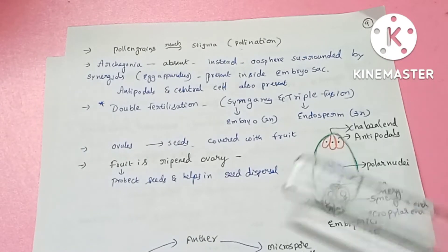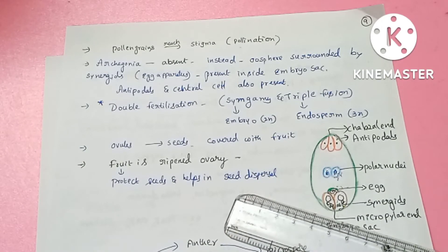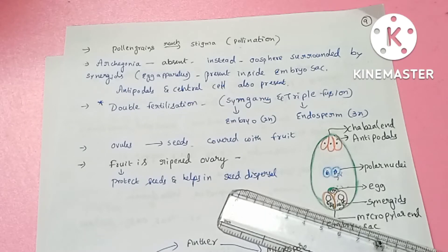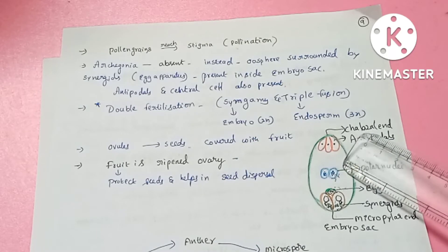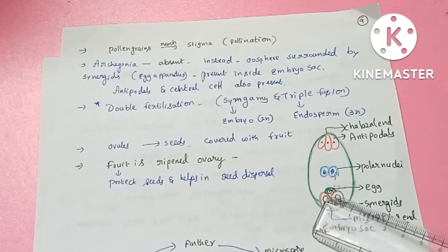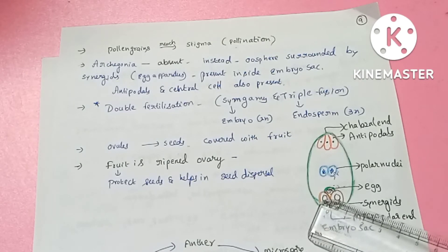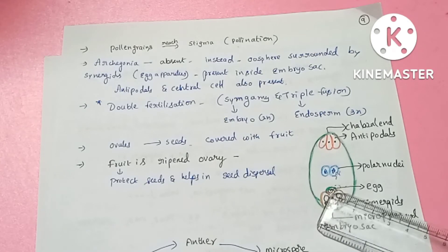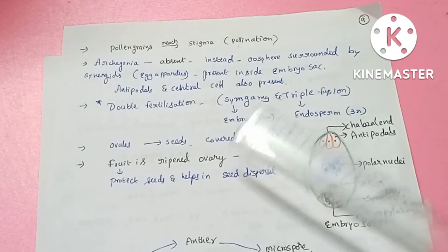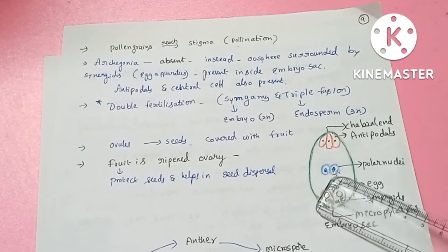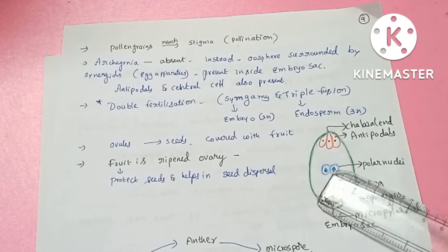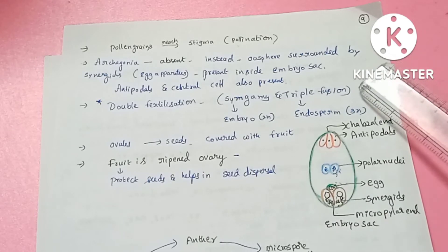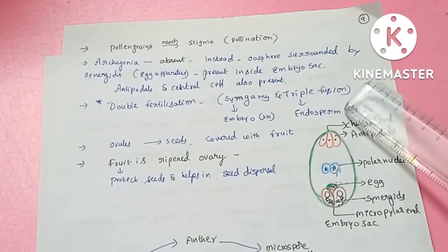During fertilization, the pollen tube is formed and releases male gametes. One male gamete fertilizes the egg — this is syngamy — producing a diploid (2n) embryo. Another male gamete fuses with the two polar nuclei of the central cell — this is triple fusion — forming the endosperm. This process is called double fertilization.